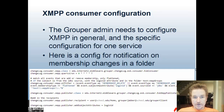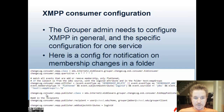The grouper admin needs to configure XMPP in general, and a specific configuration for one service that you're provisioning notifications to. Here's the config for notification on membership changes in a folder. In grouperloader.properties, you configure an XMPP consumer that looks at membership adds or deletes for a certain folder or subfolder, and you also want to make sure there's a login ID so it's only for people. Then you send that to a couple of recipients — one is a person just to make sure things are happening, and one is the system that's going to be responding to the events by refreshing its cache.